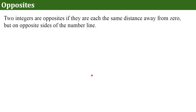Now let's define opposites. Opposites are two integers that are the same distance away from 0 but on opposite sides of the number line — that's where the name comes from. We're looking for two integers that are both the same distance from 0 but on opposite sides of 0.